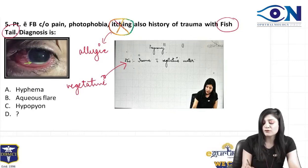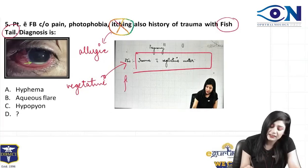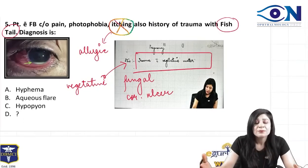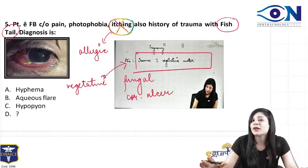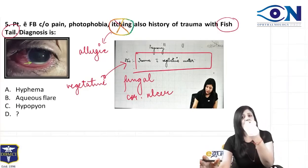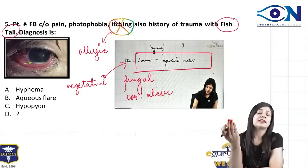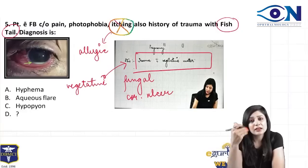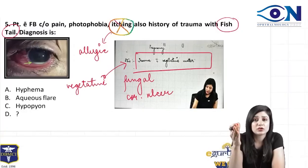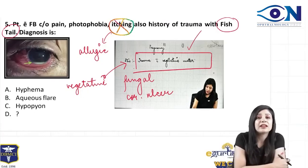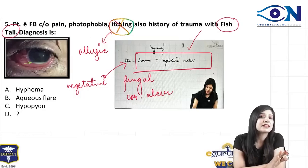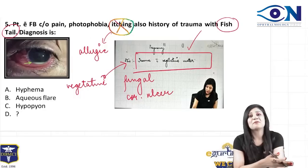They have given you a history of fishtail trauma, which means vegetative trauma. Whenever you get a history of vegetative trauma, it is very clear that it is a fungal corneal ulcer. So it is most important to identify whether it is a bacterial ulcer or a fungal ulcer, because once you know that, you can easily describe the characteristics and the treatment.